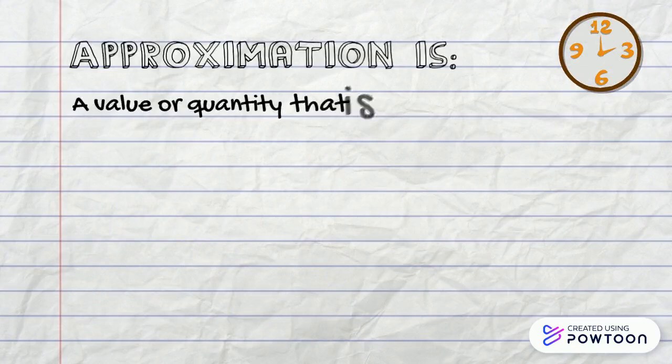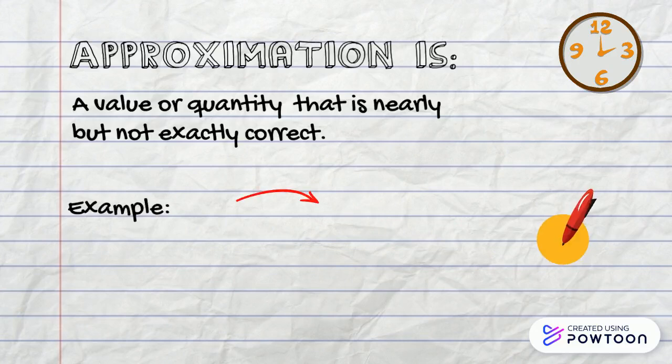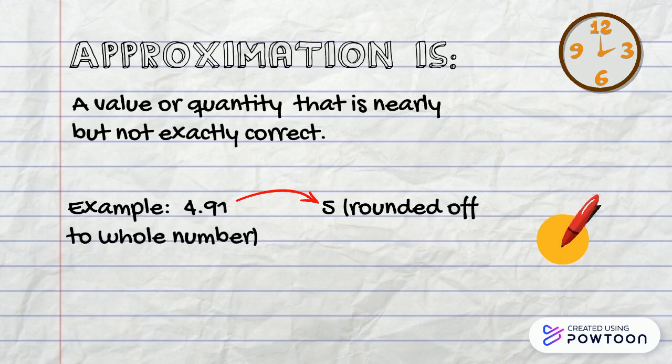Approximation is a value or quantity that is nearly but not exactly correct. Example: 4.91 rounded off to a full number is 5.